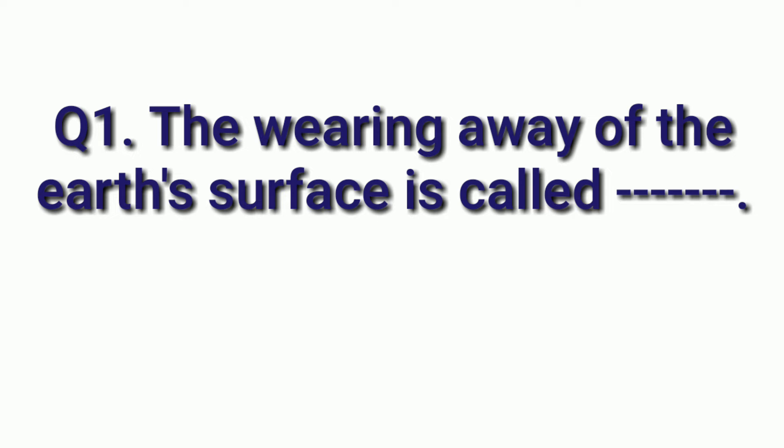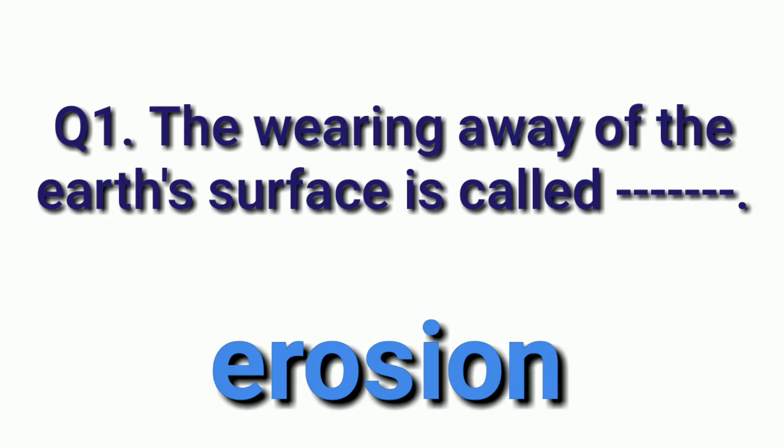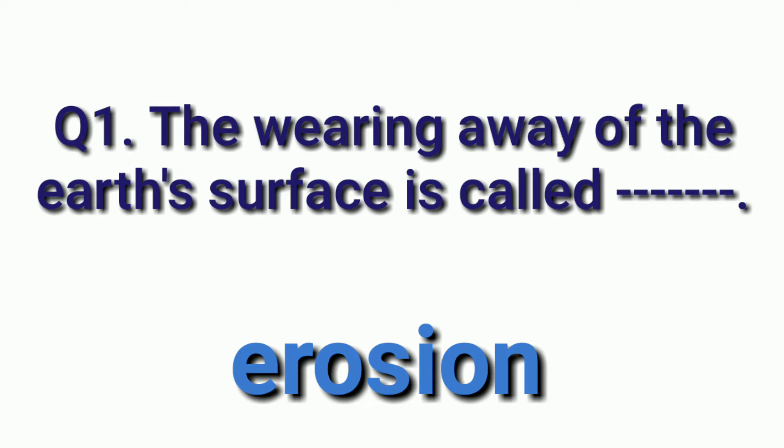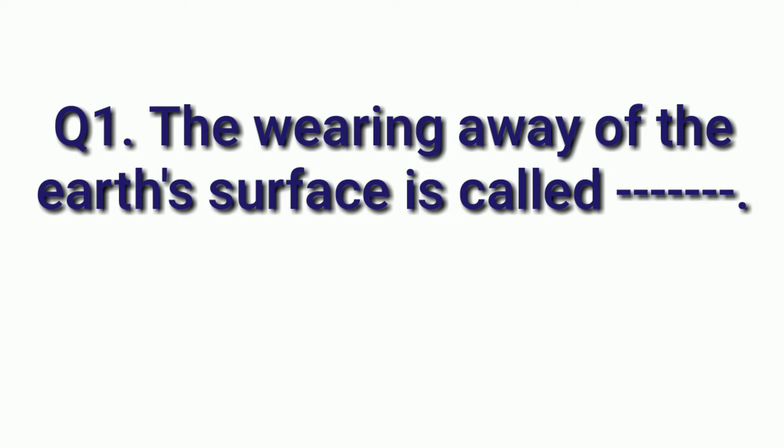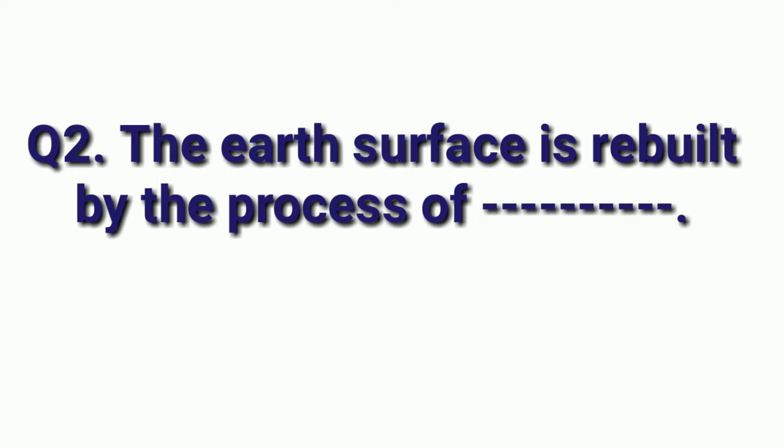First question is: the wearing away of the Earth's surface is called ___. Answer is erosion. Wearing away of a surface is called erosion.